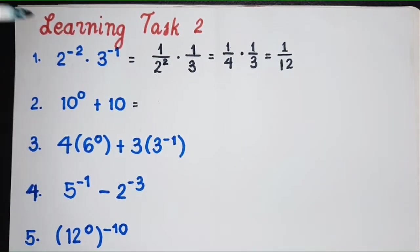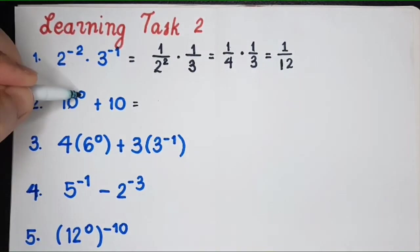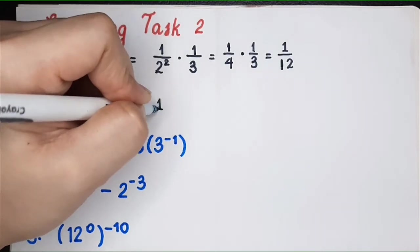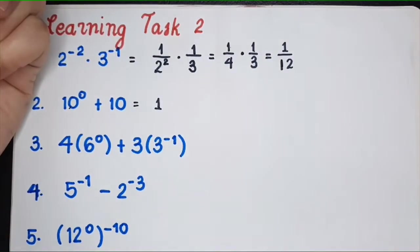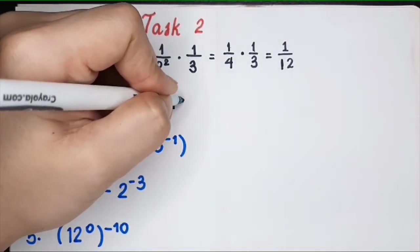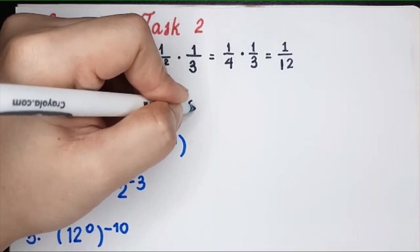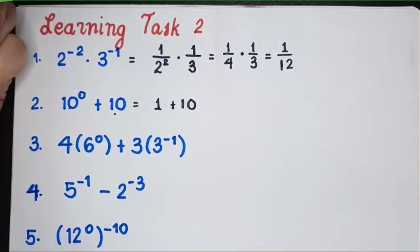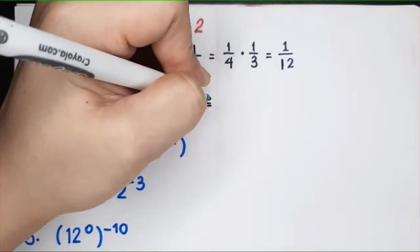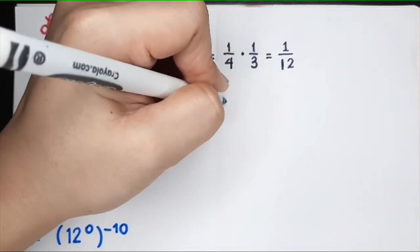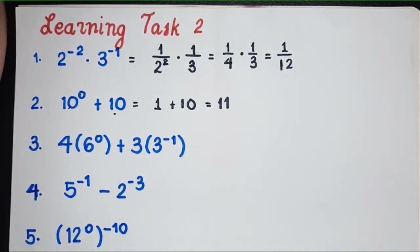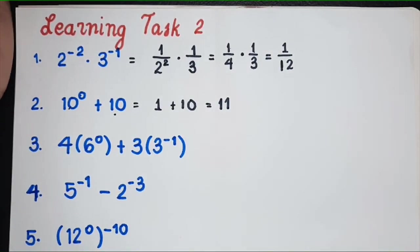For number 2, what is 10 to the 0? It is 1. And then we copy the 10 here. So what is 1 plus 10? That's 11. See? It's easy!